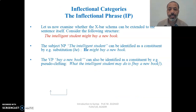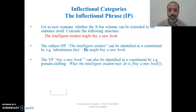The postulation of an intermediate P-bar constituent — larger than P but smaller than PP — thus has empirical support. Now let us examine whether the X-bar schema can be extended to the sentence itself. Look at the example: 'The intelligent student might buy a new book.' In this sentence we have a subject and a predicate. The subject is 'the intelligent student'; the predicate is 'might buy a new book,' which consists of 'might' as a modal verb and 'buy a new book' as a VP.